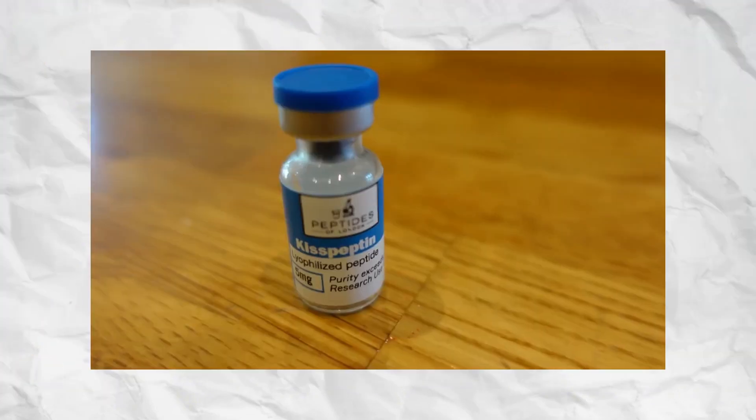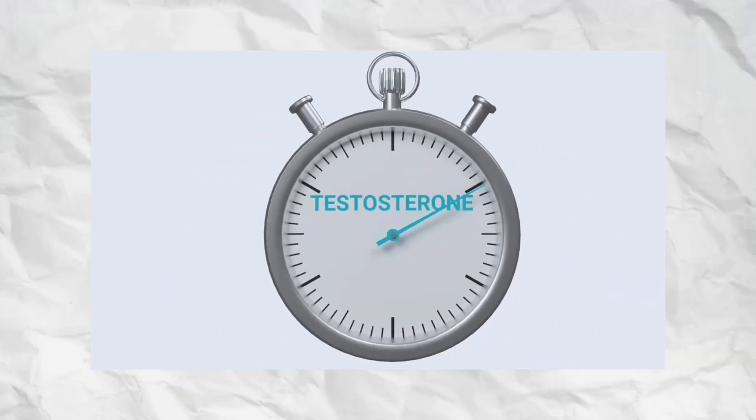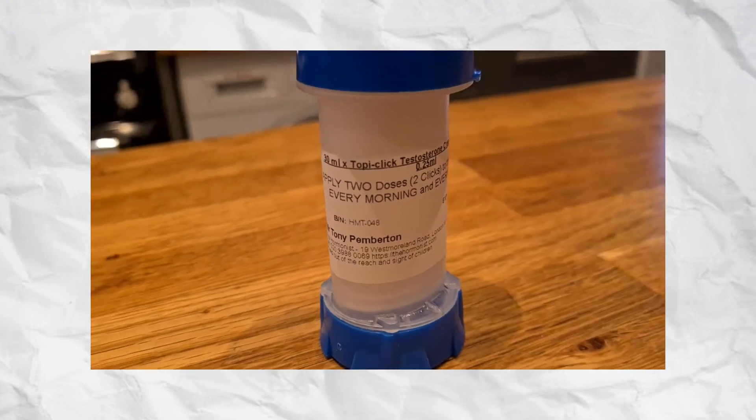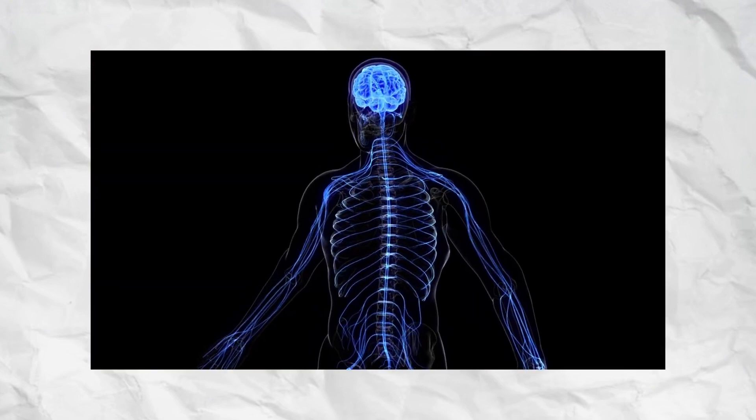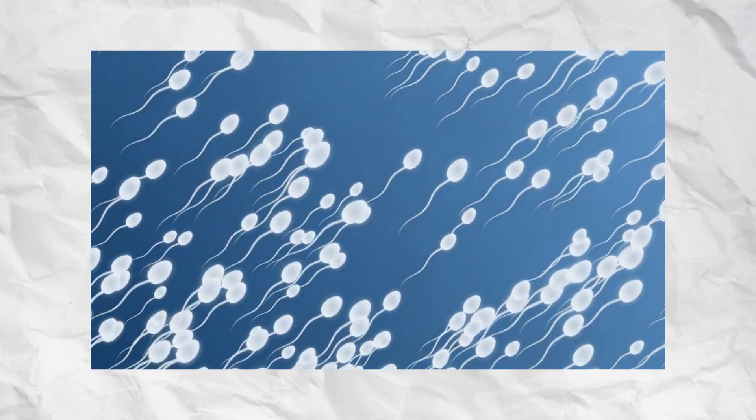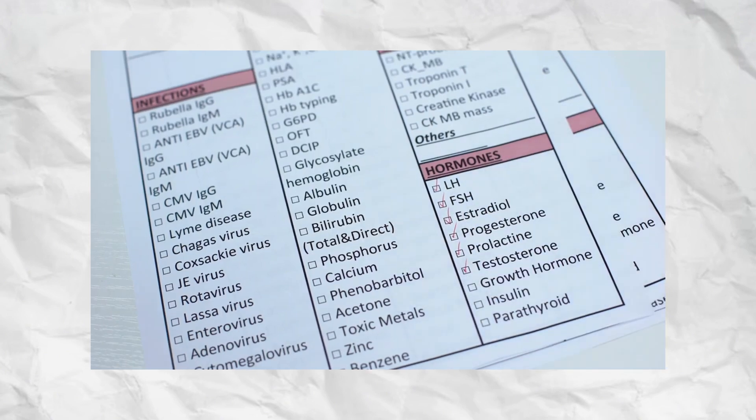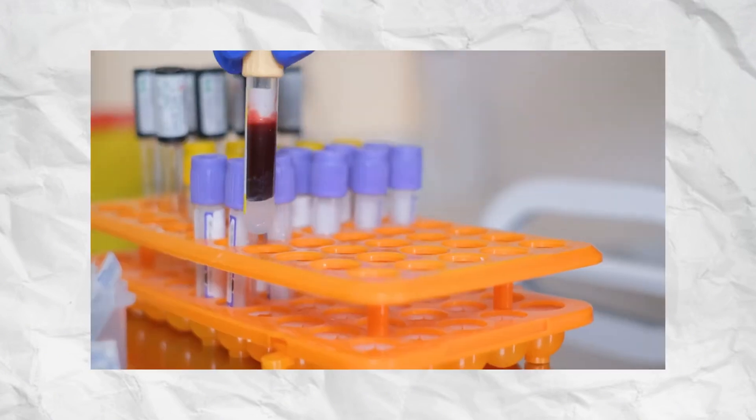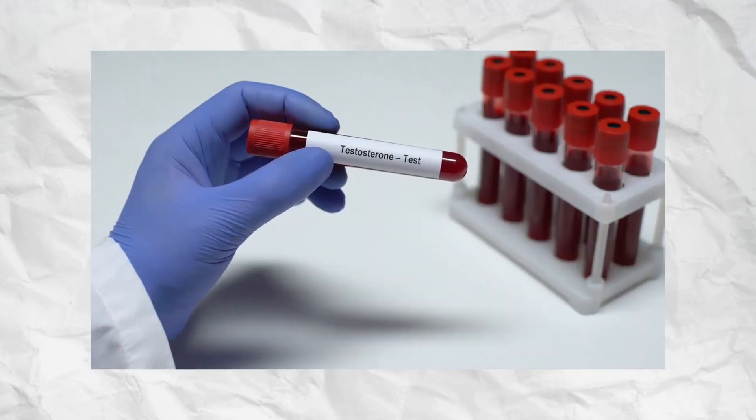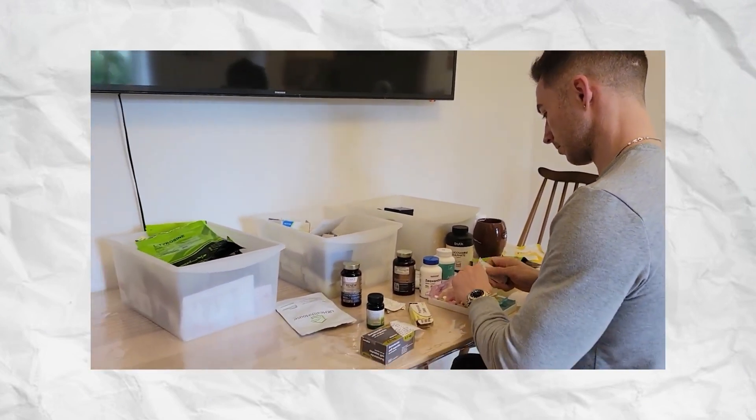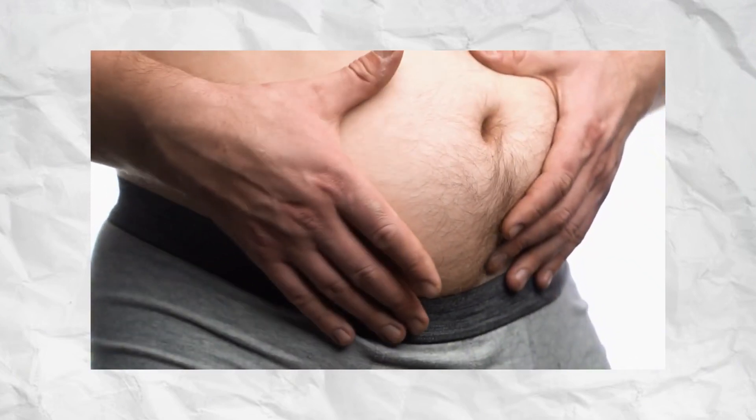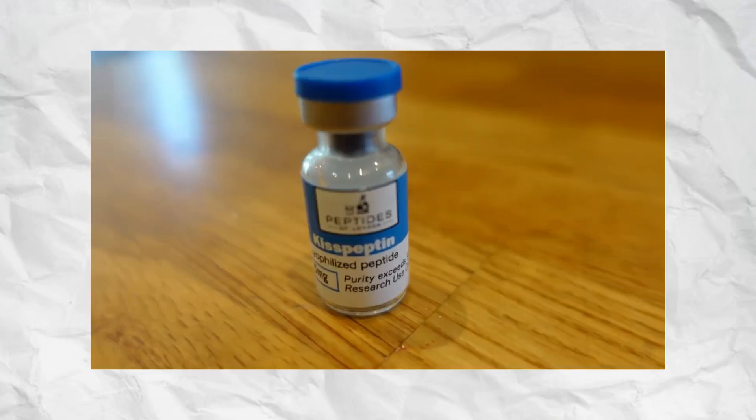Kisspeptin 10 is a synthetic version of a natural peptide that regulates reproductive hormone release. It acts on the hypothalamus, stimulating the secretion of gonadotropin-releasing hormone, GnRH, which then signals the pituitary gland to release luteinizing hormone, LH, and follicle-stimulating hormone, FSH. These two hormones directly influence testosterone production in males and fertility regulation in both sexes.